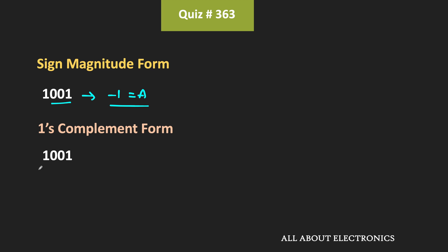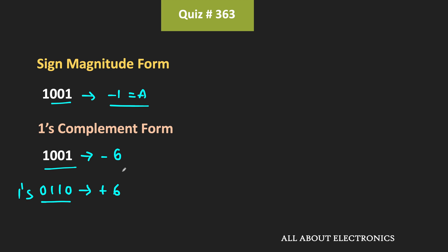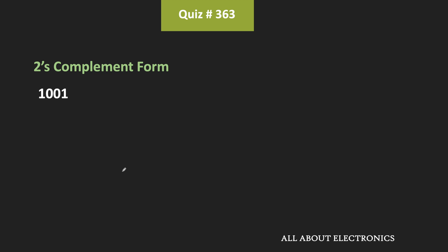When we consider 1001 in one's complement form, that represents B. In one's complement, when the MSB is 1, the number is negative. To find the exact value, we take the one's complement of the given number — flipping all ones to zeros and zeros to ones — giving us 0110, which corresponds to plus 6. So the given number in one's complement form equals minus 6, meaning B equals minus 6.